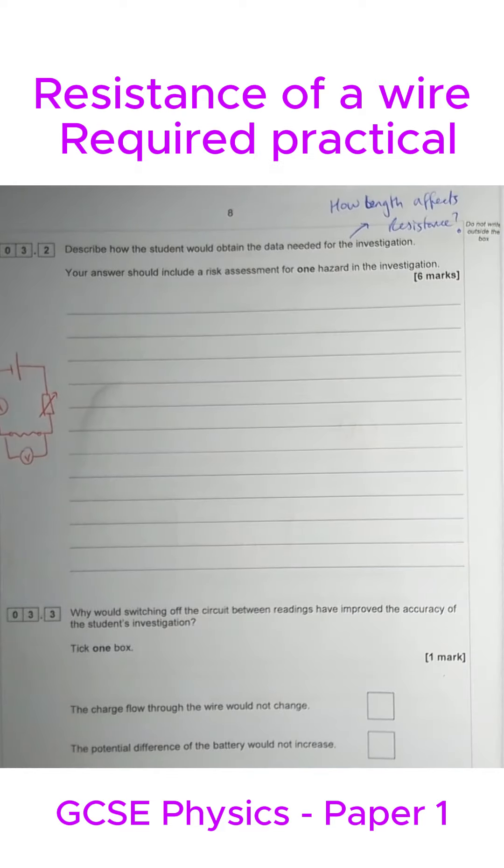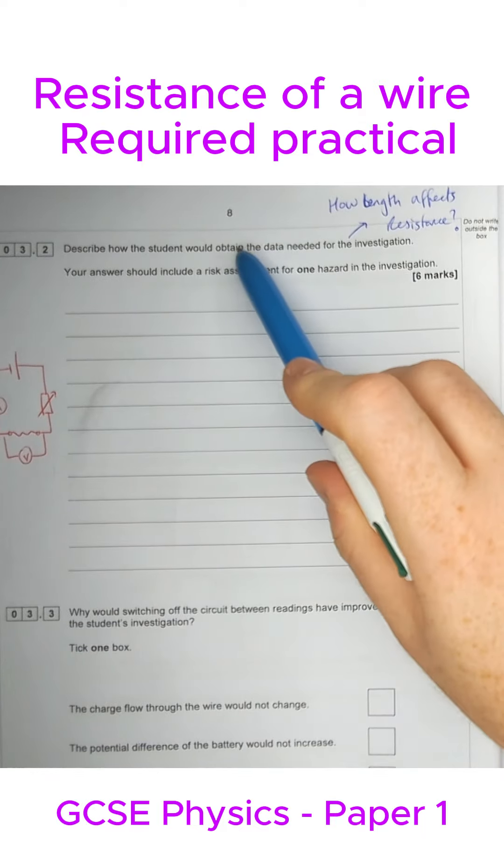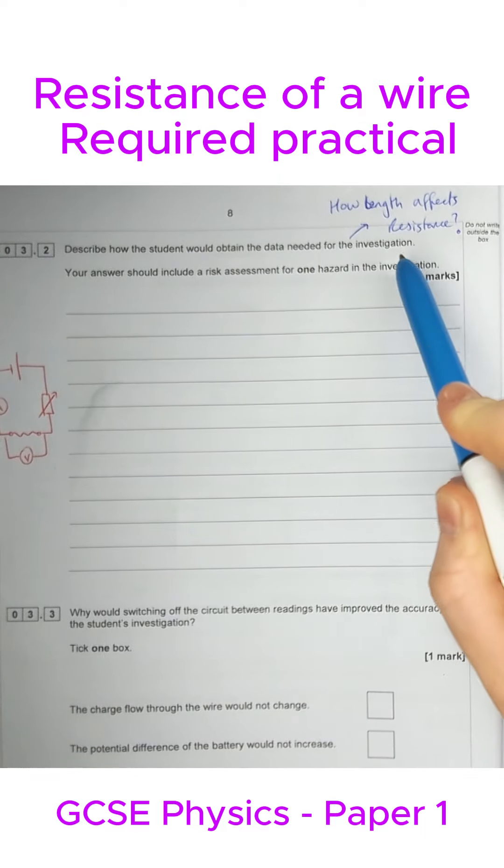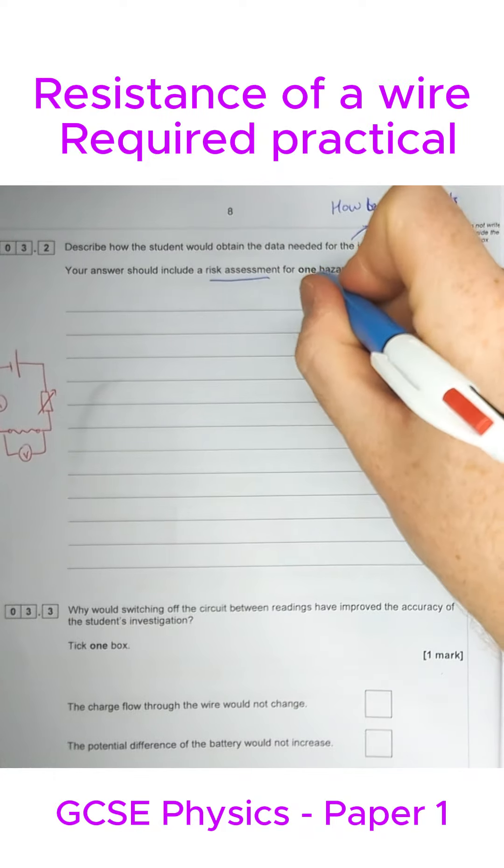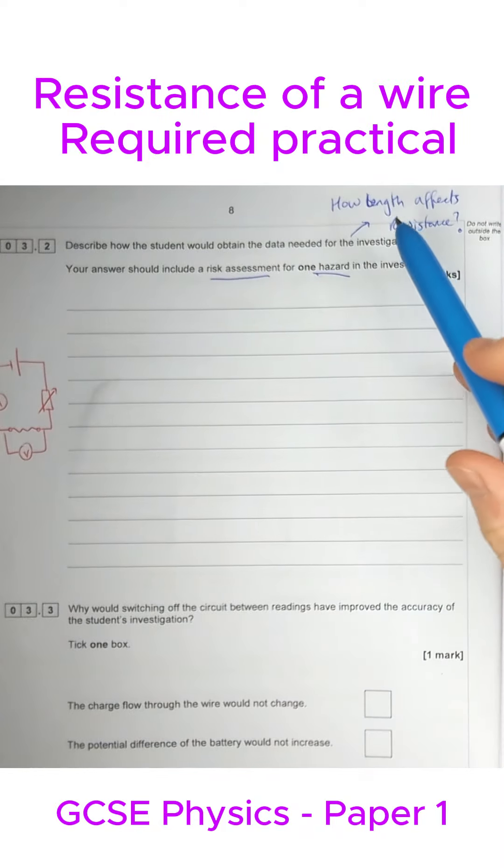Next up we've got the dreaded 6 marker. It says, describe how the student will obtain the data needed for the investigation. We need to include a risk assessment for one hazard in the investigation. So what we're investigating from the previous page is how length affects resistance.